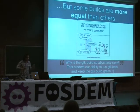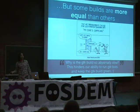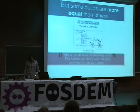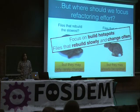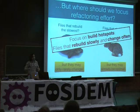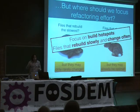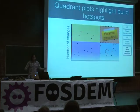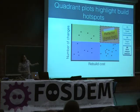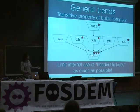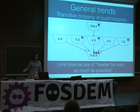To briefly sum up: first, not all builds are equal — some files take much longer than others to rebuild. We can fix those problems by refactoring, but the challenge is knowing which files to focus on in a large system. We argue you should focus on hotspot files — ones that rebuild slowly and also change often. We came up with a three-step approach and a simple quadrant visualization to show which files to refactor first, did an open source case study, and highlighted the transitive property of build hotspots.